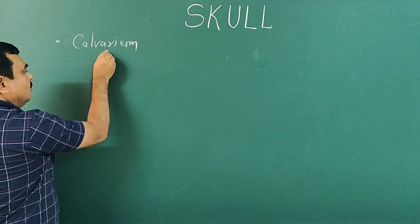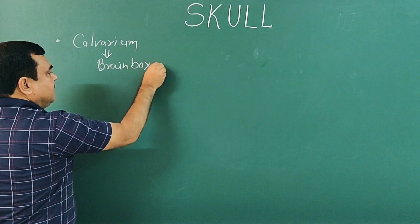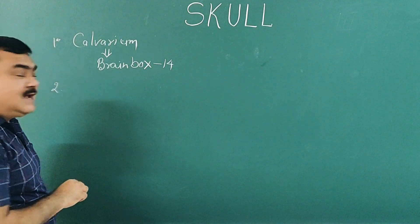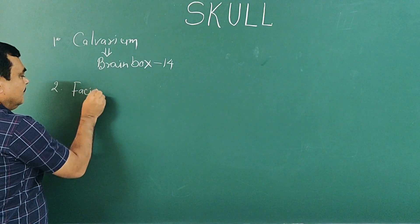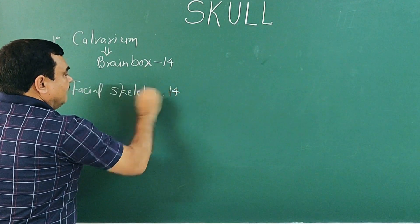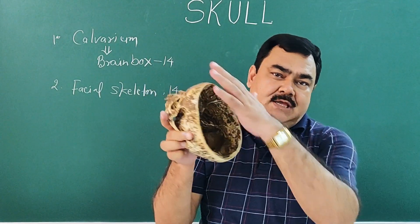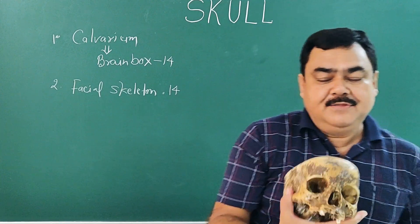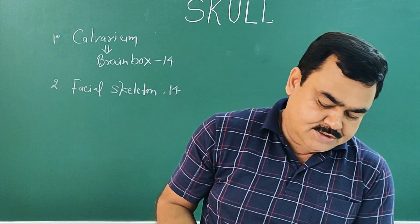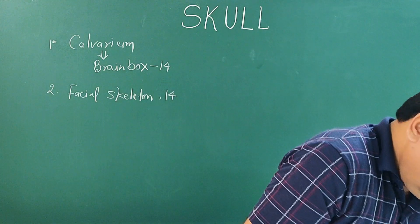The calvarium, also known as the brain box, is made up of 14 bones. The second part is the facial skeleton, which also includes 14 bones. Here the roof is removed to show the brain box, and this front part is the facial skeleton.